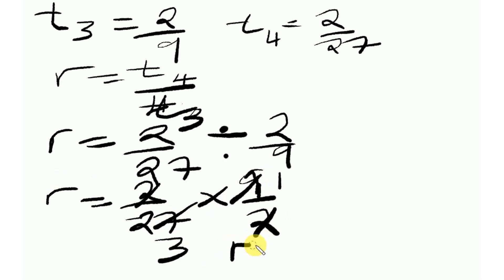So this means R is equal to 1 multiplied by 1, that's 1 on the numerator, and on the denominator 3 multiplied by 1, that's 3. So the common ratio is 1 over 3.